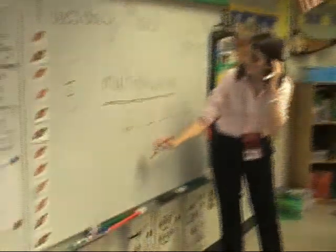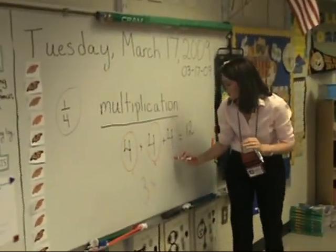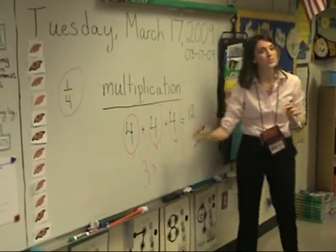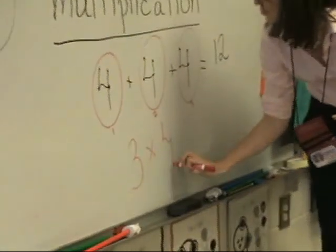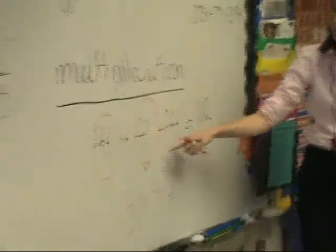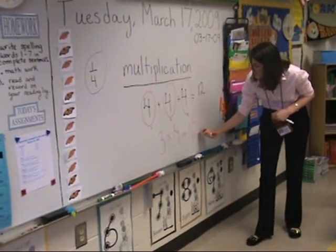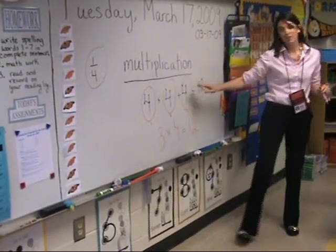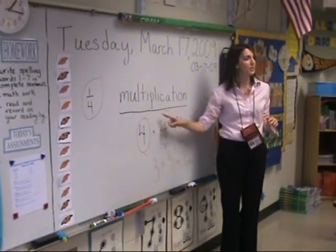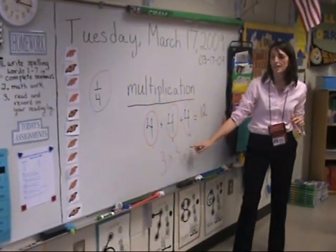I have three groups — one, two, three. Three times four. So I'm going to say three times four equals, and we already solved it. Three times four equals twelve. And these are the same. Three times four means four plus four plus four, and four plus four plus four means three times four.